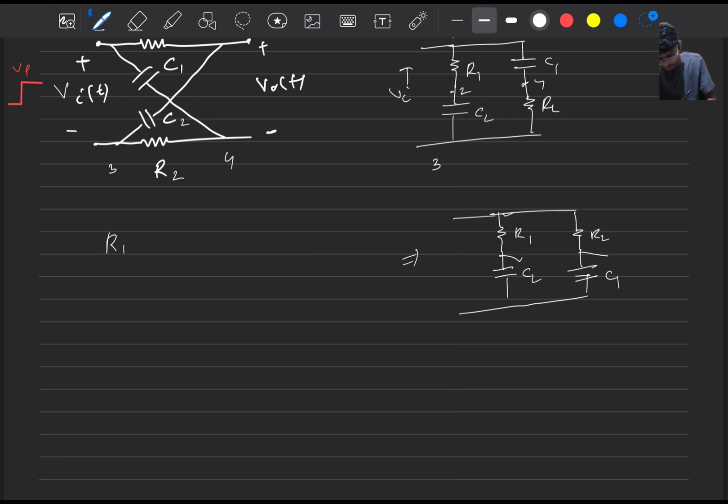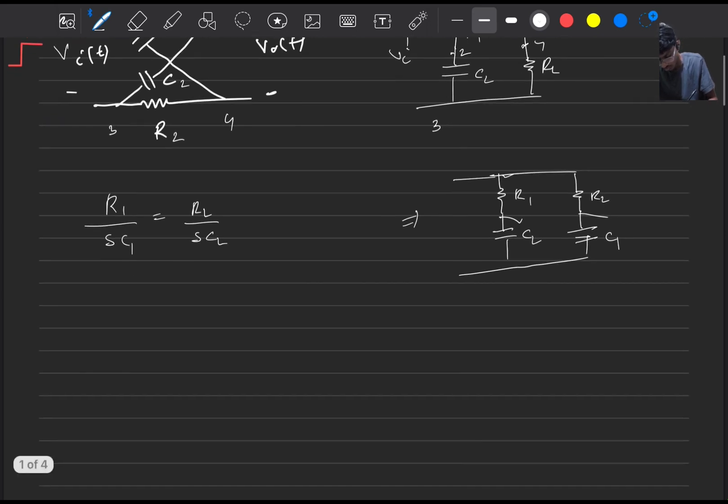Now what will happen is for it to act as a bridge circuit, this multiplication of impedances should be equal. R1 times s C1 should be equal to R2 times s C2.